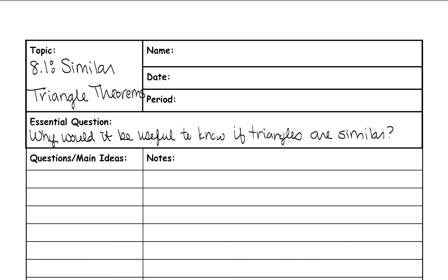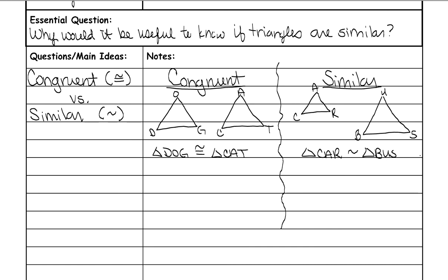The first thing we need to go over is the difference between congruent and similar triangles. Congruent has a congruent symbol, and similar also has a similar symbol — just a little squiggly line. Here's an example of a set of congruent triangles and also a set of similar triangles. The first set are congruent, and the second set are similar.